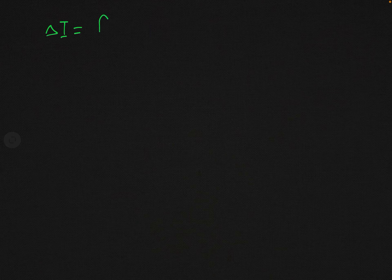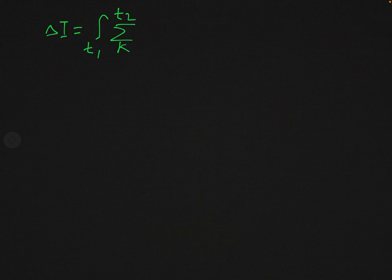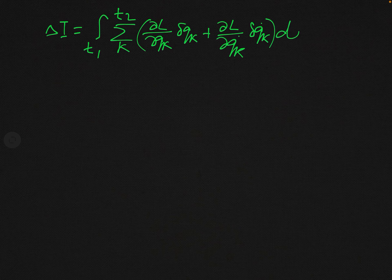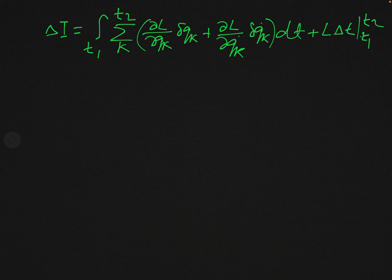Now, del L / del q_k dot equals p_k, by the definition of generalized momenta - the generalized momentum is the partial derivative of the Lagrangian with respect to generalized velocity. So we write p_k instead of del L / del q_k dot. Therefore, delta integral from t1 to t2 of L dt equals integral from t1 to t2 of summation over k of [d/dt(p_k) delta q_k plus p_k d/dt(delta q_k)] dt, plus L delta T at limits t1 and t2.